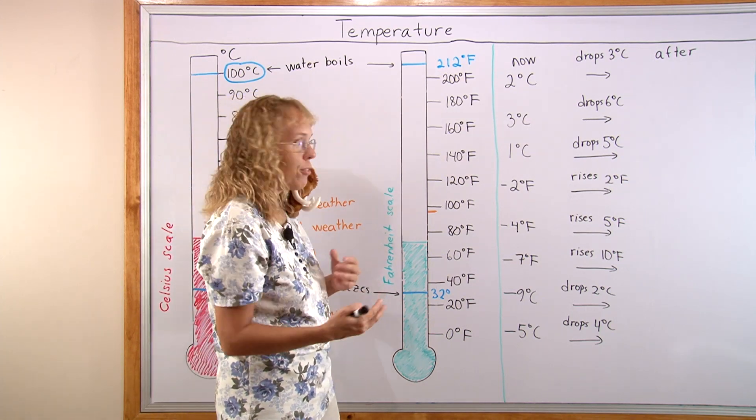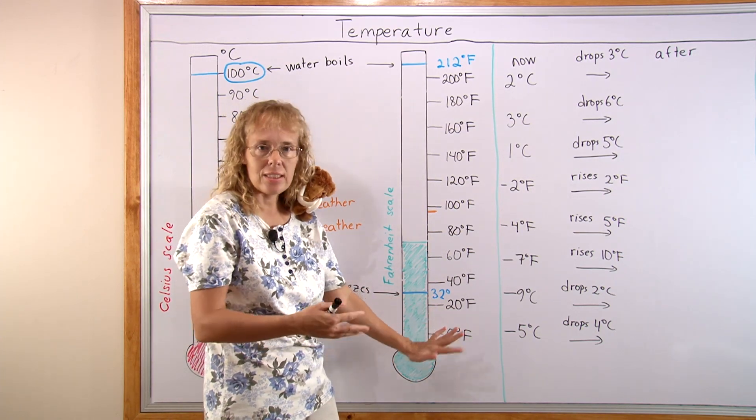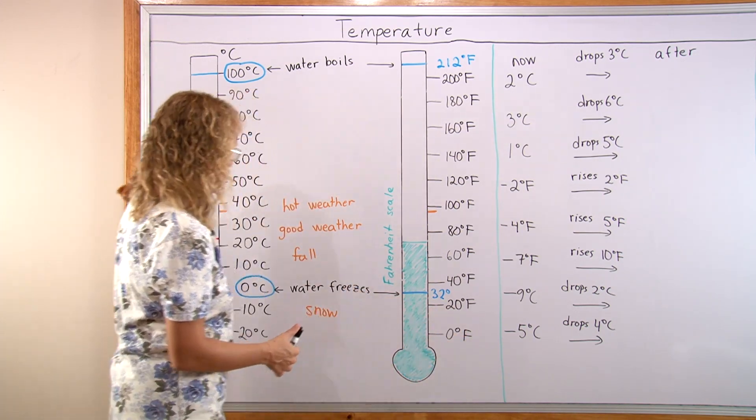Winter weather, if you have snow and ice in the winter, would be below 32, 20 something, 10 something, zero, even negative numbers.